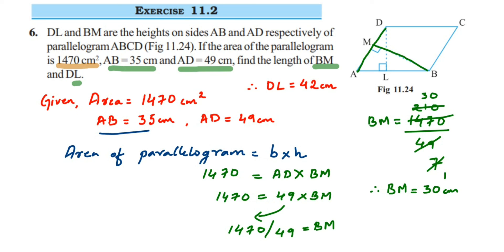Using the formula for area of a parallelogram, we found both heights: DL = 42 cm and BM = 30 cm. I hope this question is clear. If you have further questions or doubts, please drop a comment below and I'll try to make a video on it. Thank you for watching!